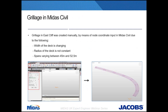The grillage in Eastcliff Viaduct was created manually by inserting node locations, rather than using Midas Civil wizards, for three main reasons: the deck was of varying width, the radius of the deck was not constant, and the spans varied. We created a plan of the deck in AutoCAD and used a regular XY grid to define node locations, which were then copied over to Midas Civil to create the structural profile.